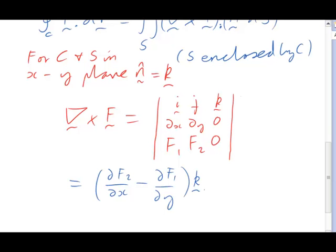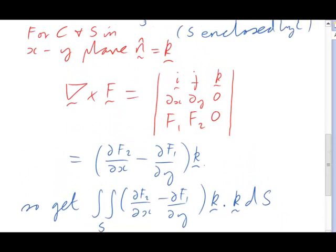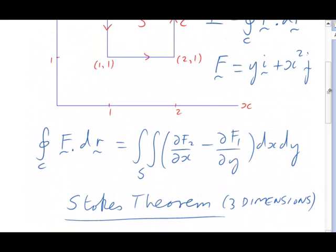So replacing k·k with 1 and dS now being only in the xy-plane with dx dy, we have our expression for Green's theorem in the plane without having to remember it. There it was back there. You see that agrees.